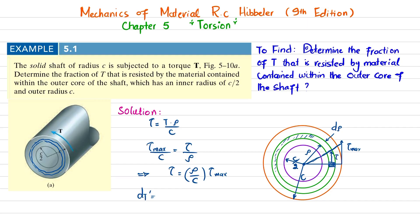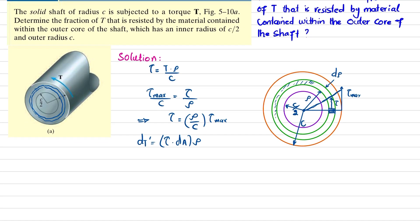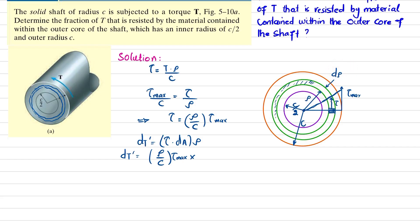To find dT: the shear stress multiplied by the small differential area dA gives the shear force, and multiplying by the distance ρ gives the torque. So dT = τ · dA · ρ. Substituting τ = (ρ/c)·τ_max and dA = 2π·ρ·dρ (the area of the thin ring), we get dT = (2π·ρ³·τ_max / c)·dρ.